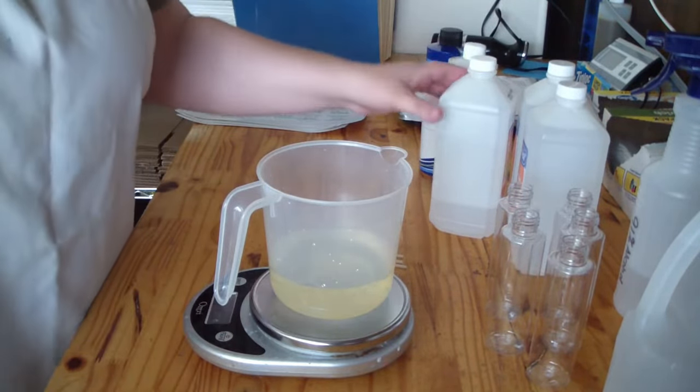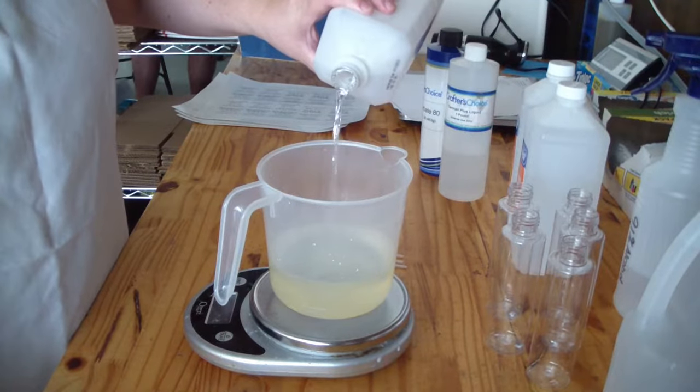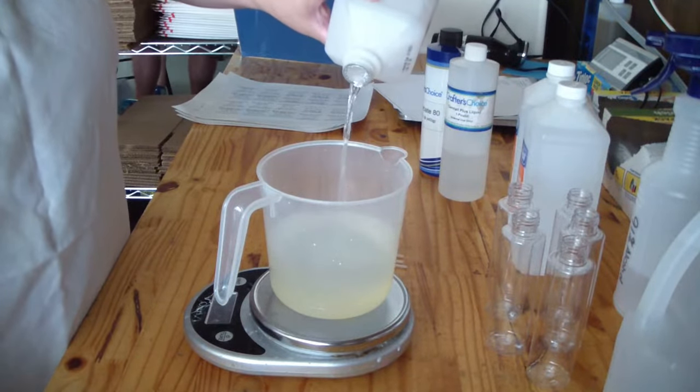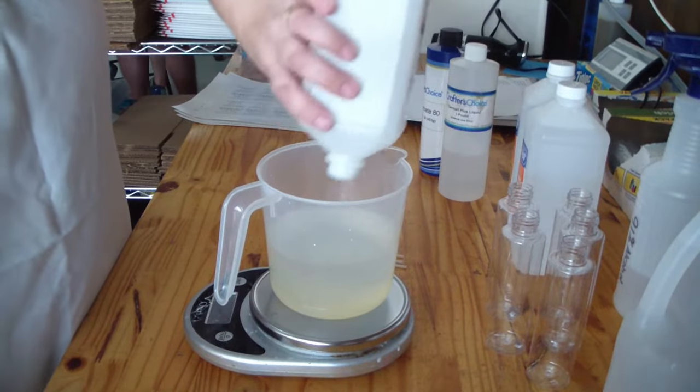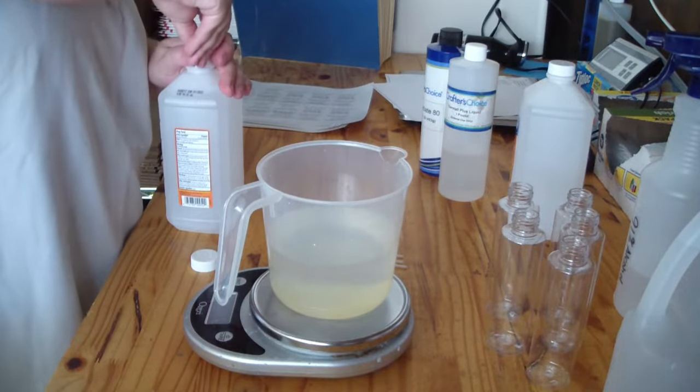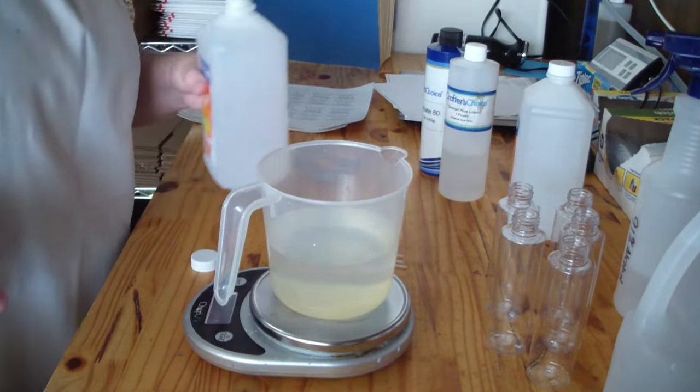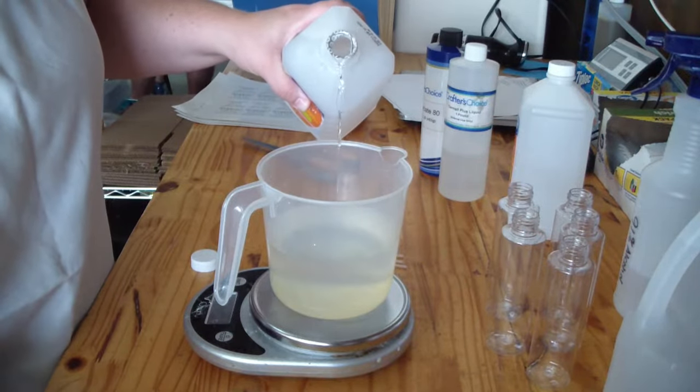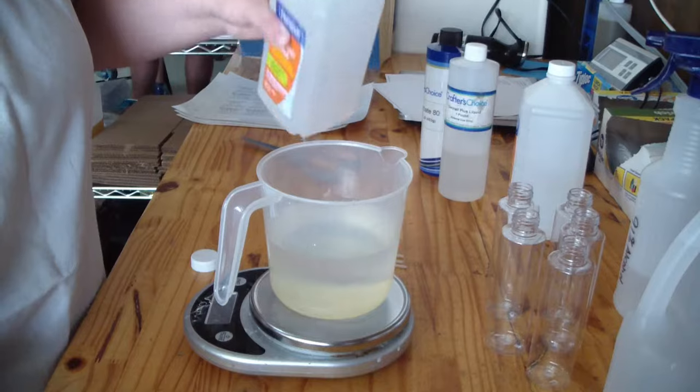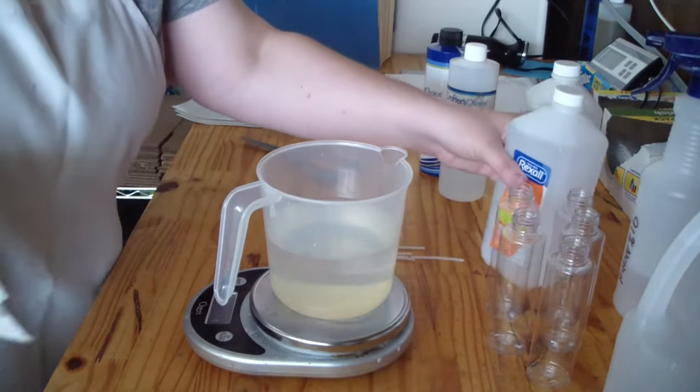And then eight ounces of alcohol. I may have to open another one. I hope I have enough alcohol on hand to make all the ones that I want to make. This scale that I have is pretty precise. It says 8.01.